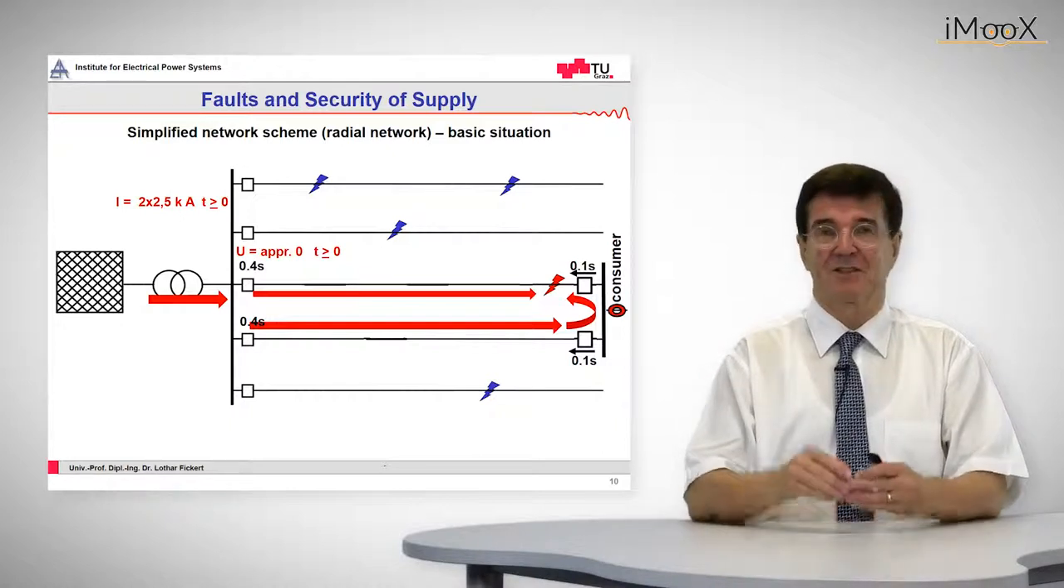So if now a fault occurs, we have the fault current of five kilo amps entering the medium voltage distribution network. It splits up into the two lines that feed into the fault. For example, if the fault is at the end of the line, then the fault current is split up 50 to 50 and we have 2.5 kilo amps flowing through each of those feeders.